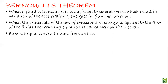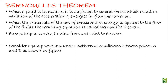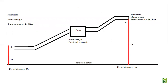Pumps help to convey liquids from one point to another. Consider a pump working under isothermal conditions between points A and B as shown in the diagram. Point A is located at the inlet and point B at the outlet, and the pump is working to convey the liquid from point A to point B.